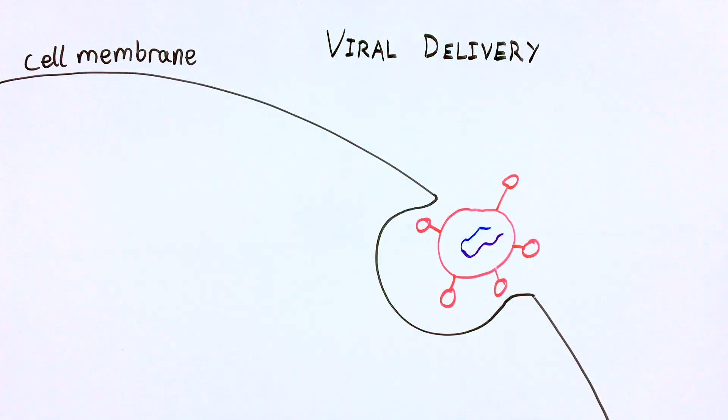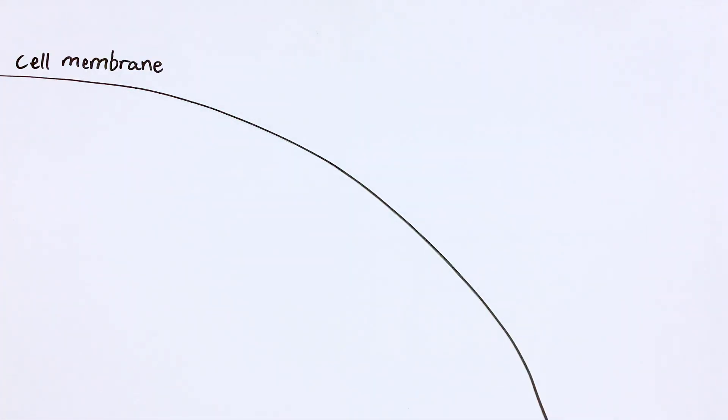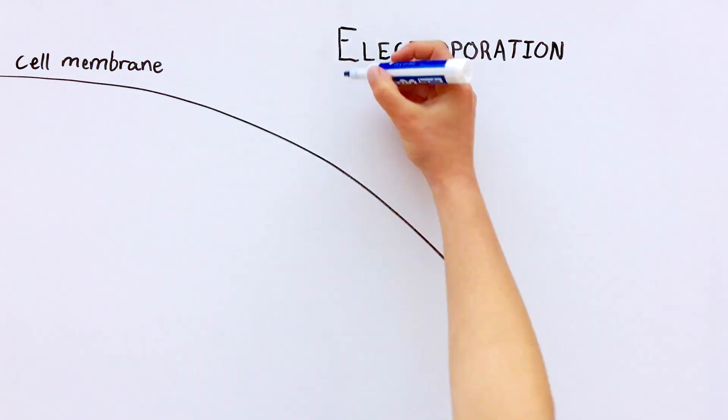Commonly, scientists use specially engineered viruses to deliver helpful DNA into human cells. In this paper, lead author Theo Roth outlines an alternative method called electroporation.